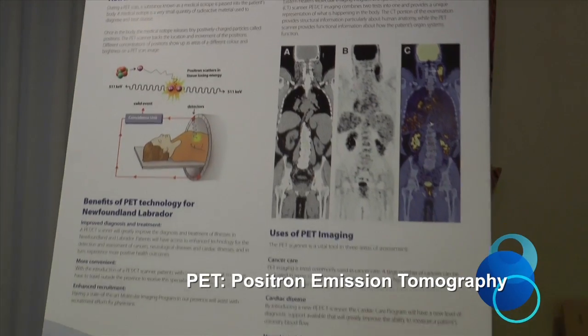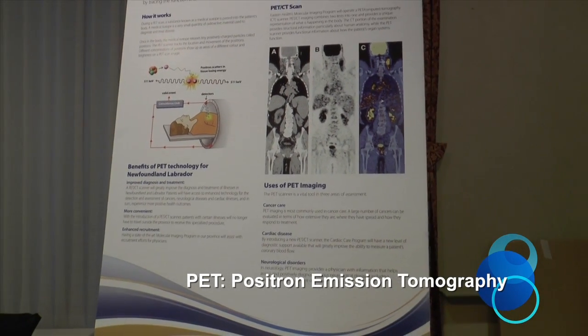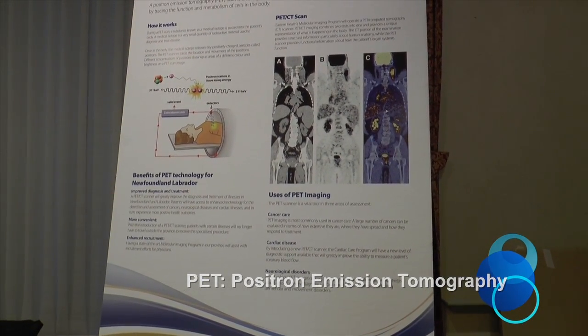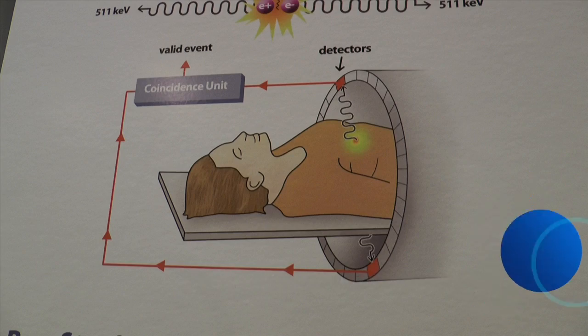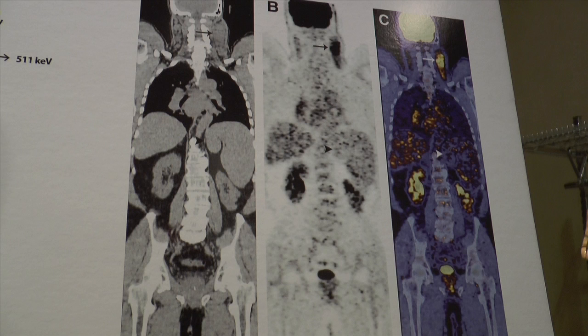PET means positron emission tomography. Essentially it's a very unique form of nuclear medicine imaging where we inject radioactive molecules into the body. These little radioactive molecules will emit radiation that we can detect and create three-dimensional images of the distribution of those molecules throughout the body.